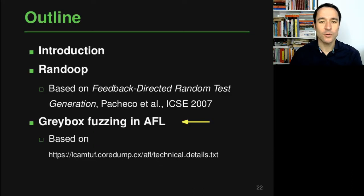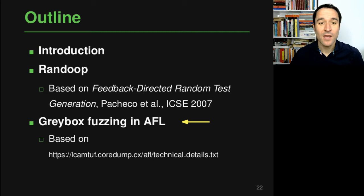Hello and welcome back to the program analysis course. This is the lecture on random testing and fuzzing, and this is part three of this lecture where we will look into a form of random testing called gray box fuzzing. In particular, we will look into a tool called AFL which implements many of these ideas into a practically useful tool that is widely used in industry and also academia.